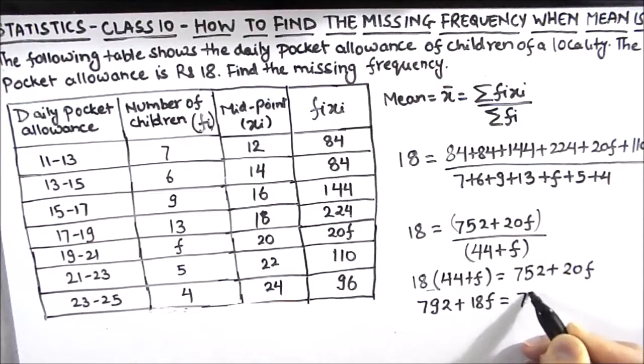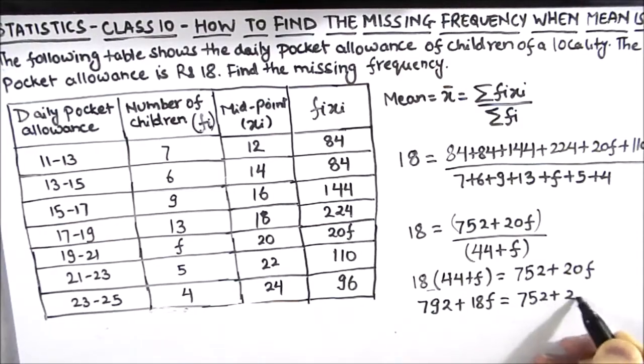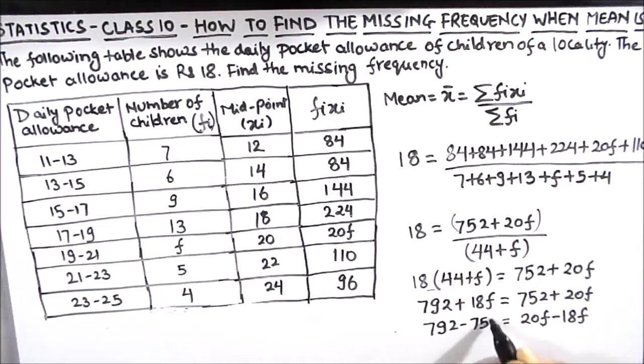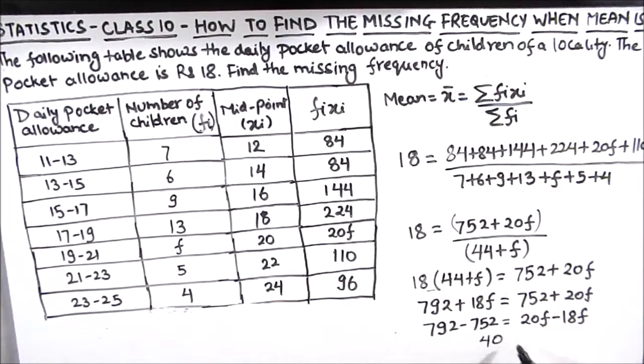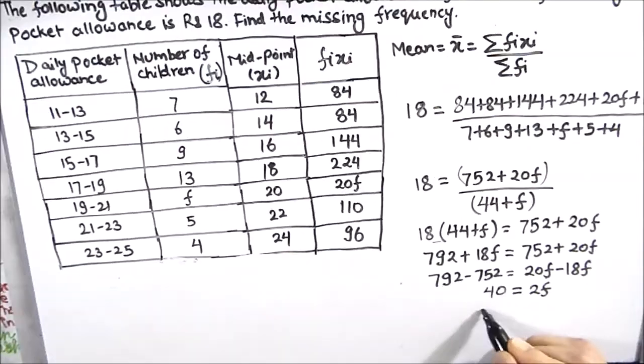So we are going to transpose this 18f to the right hand side and 752 to the left hand side. So this will be 20f minus 18f equals 792 minus 752. So 792 minus 752 is 40 equals 2f.